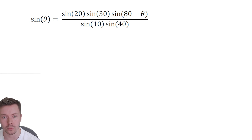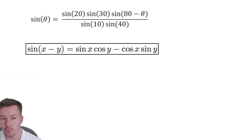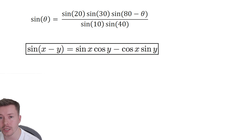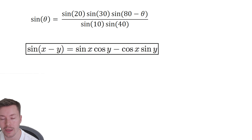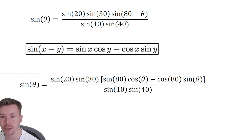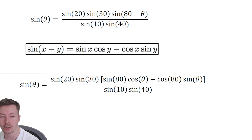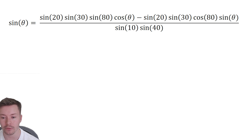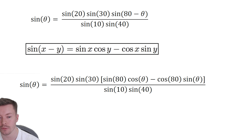We substitute PC over BP in — replacing PC on top with sine(80 minus theta) and BP on the bottom with sine 10. Now, sine(80 minus theta) is a bridge we need to cross. We can use the compound angle formula — something you'll come across at A-level — which allows us to rewrite sine(80 minus theta) in terms of sines and cosines of 80 and theta. So we get sine 80 cos theta minus cos 80 sine theta.